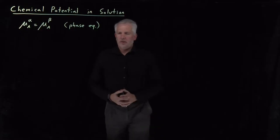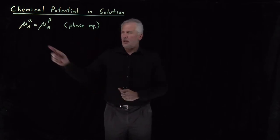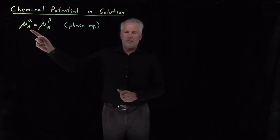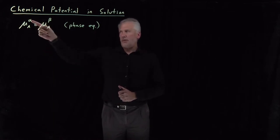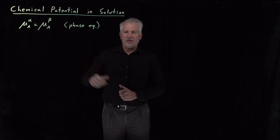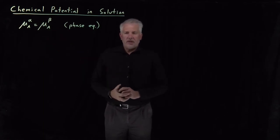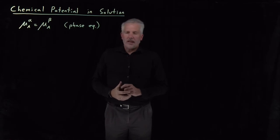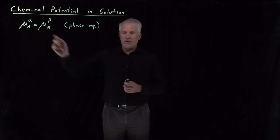We've determined the condition for phase equilibrium is that the chemical potential of a component, say component A, has to be the same in two different phases — maybe gas and liquid, maybe liquid and solid. This is important and useful because it allows us to calculate the chemical potential in one phase if we already know it in another phase when the two are equal to each other.